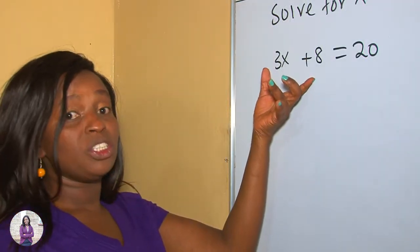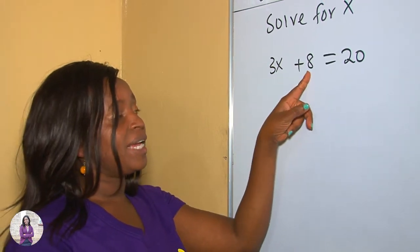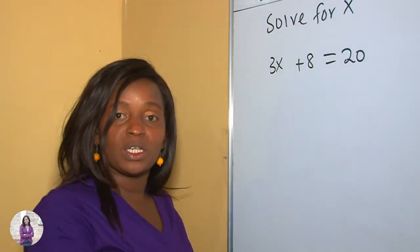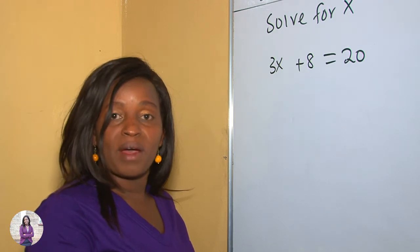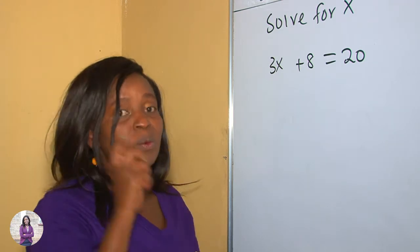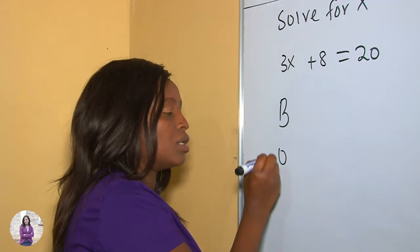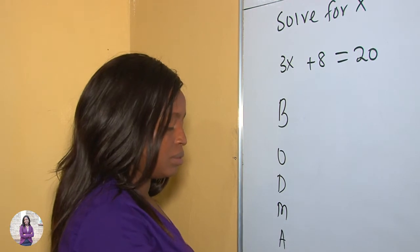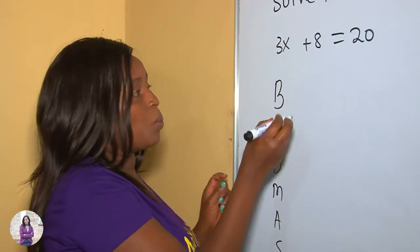In this question we have been told solve for x. And as you can see, 3x plus 8 is equals to 20. We are supposed to look for this x. In equations we also need to adhere to the order of operation, but now when you are getting to order of operation, we do a reverse or the opposite, like in BODMAS.